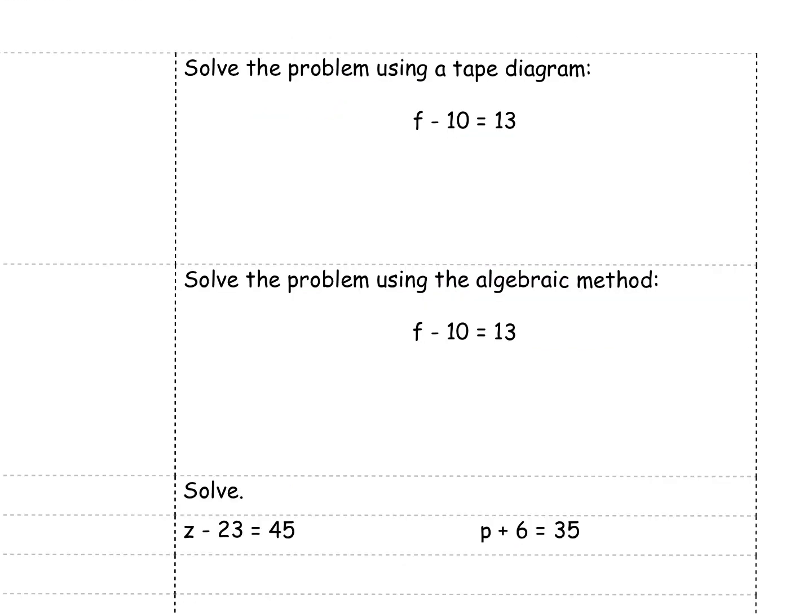We can also model subtraction problems with tape diagrams. So we have f minus 10 equals 13. This is going to look a little different. So if I have a tape diagram, here's f. But it says I took away 10. So I would say, here's f. And I need to put 10 in.